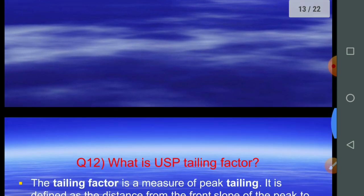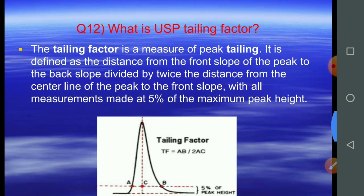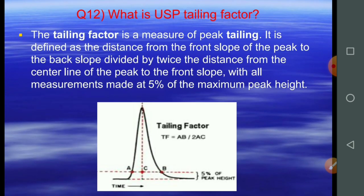Question number twelve: what is USP tailing factor? The tailing factor is a measure of peak tailing. It is defined as the distance from the front slope of the peak to the back slope, divided by twice the distance from the center line of the peak to the front slope, with all measurements made at 5% of the maximum peak height.